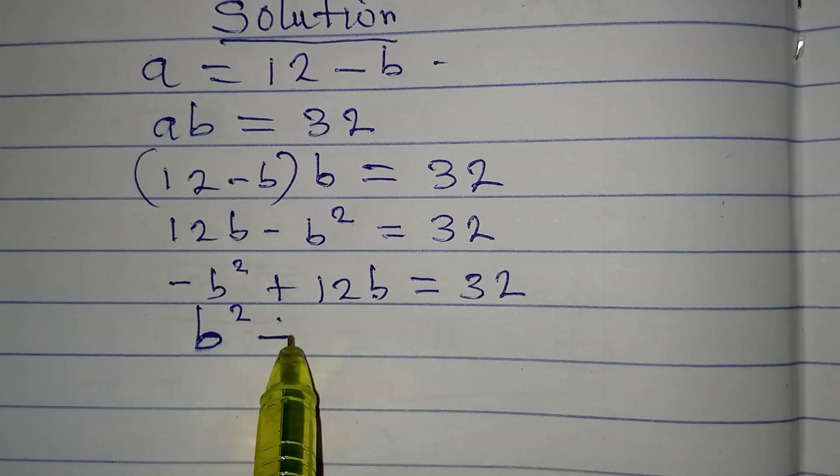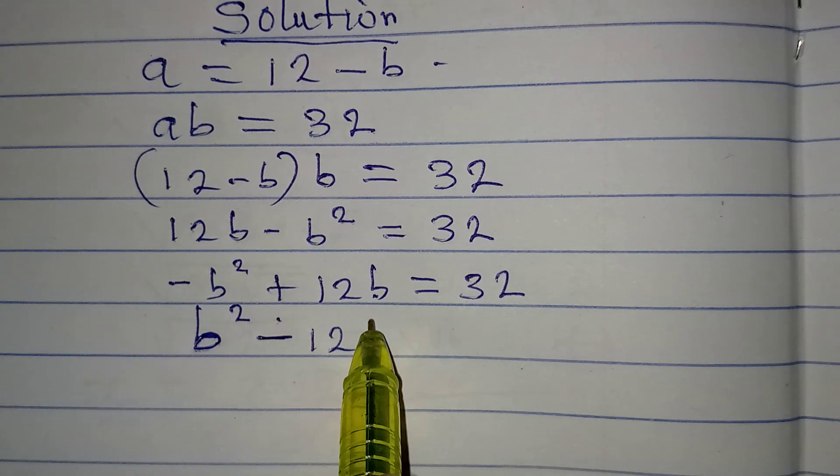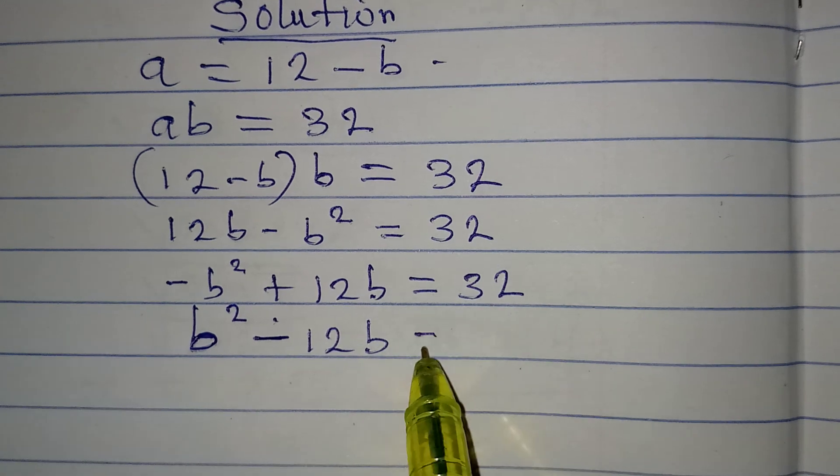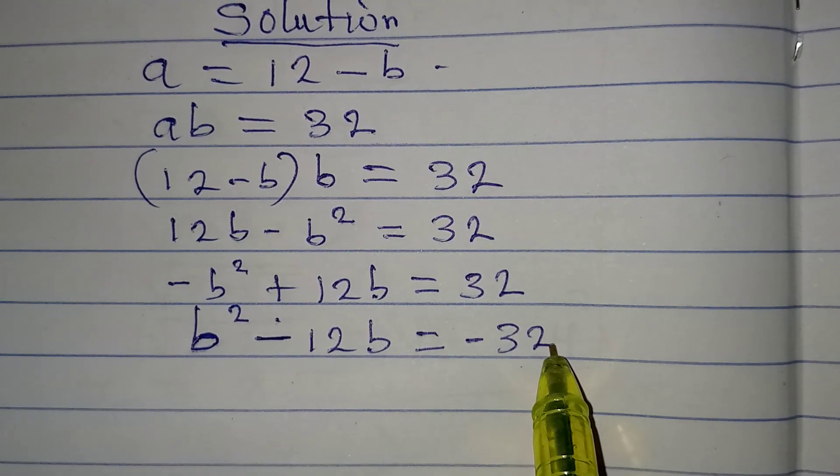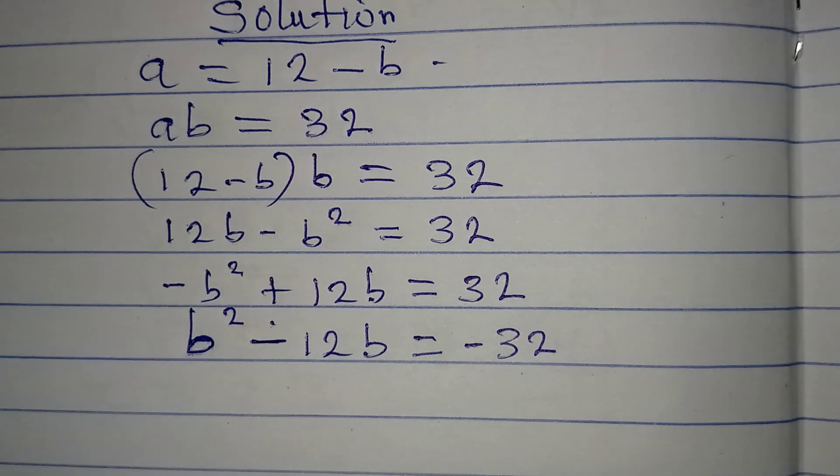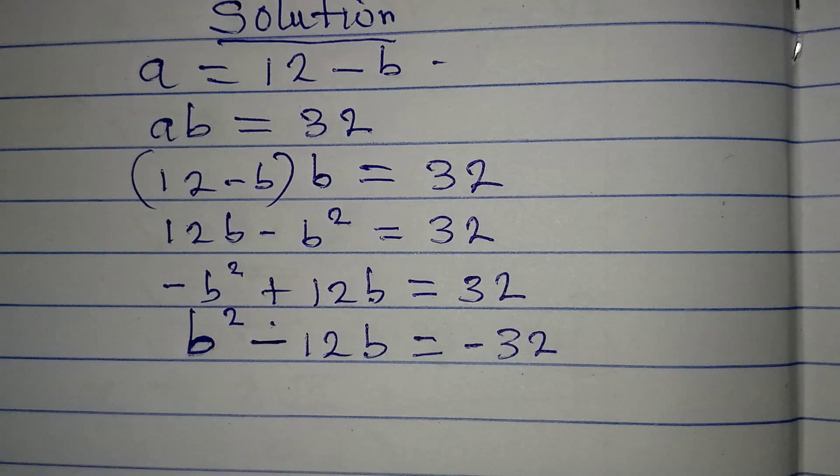Then this turns to negative, we have 12B, and then this is equal to negative 32, because it has to turn to negative.